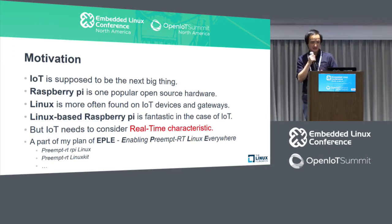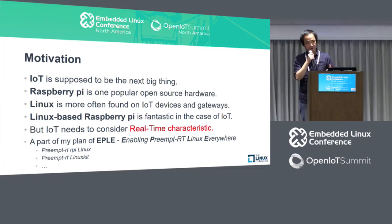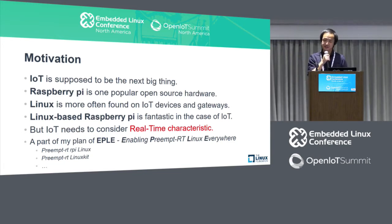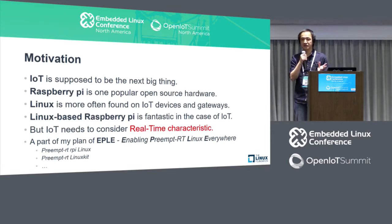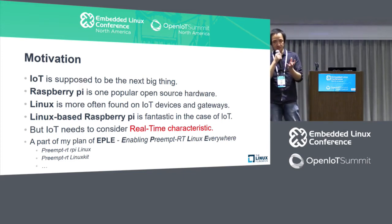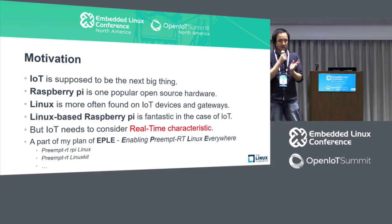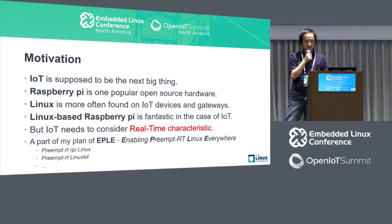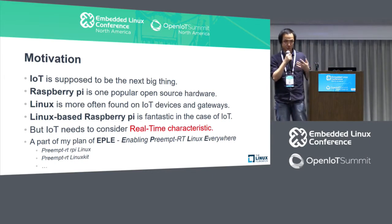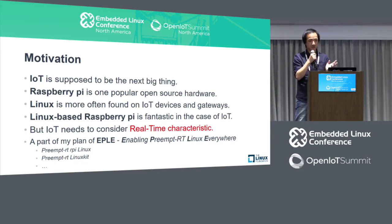I want to construct a project called EPLE — enabling preempt-RT everywhere. So preempt-RT for Raspberry Pi Linux should be one of the parts. Another part is that LinuxKit has already integrated preempt-RT. LinuxKit is a toolkit funded by Docker Corporation. Basically it can help us build a minimal Linux kernel system — keep only necessary components, with each system service in a container. You can replace each component with another as requirements change. I think LinuxKit should be a good candidate for IoT.